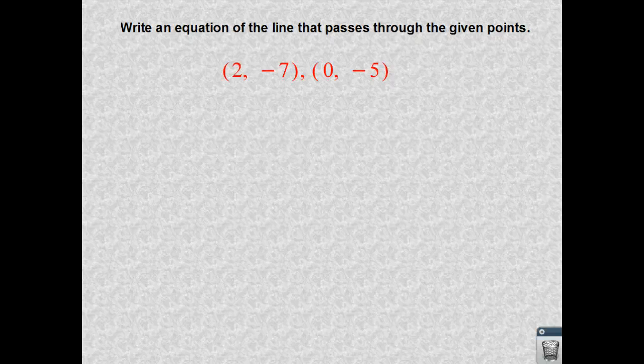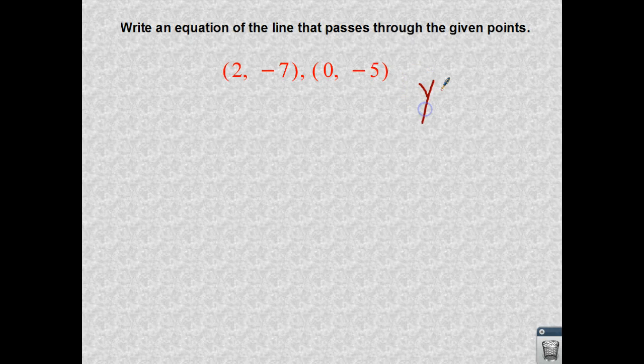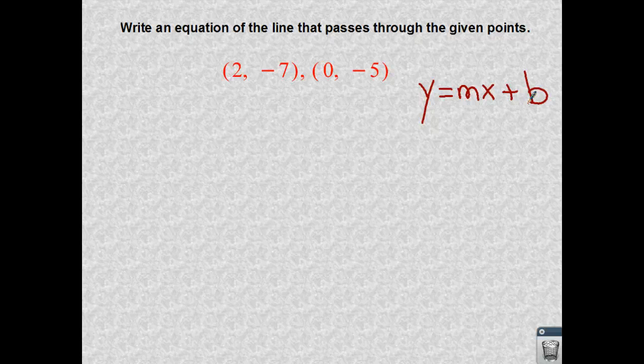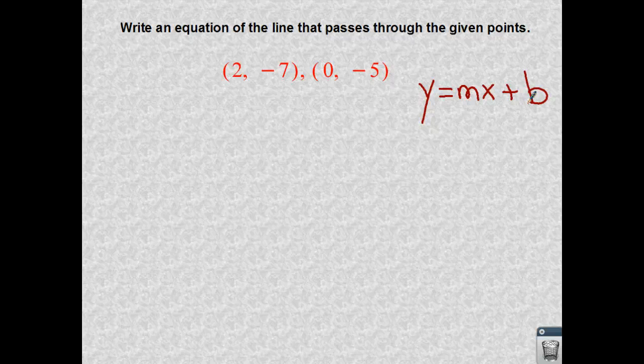All right. The next one says write an equation of the line that passes through the given points. And right now, as you know, we've been working with slope-intercept form. So the two things I need are, you guessed it, the slope and the y-intercept. Are there any items, any ordered pairs up here that help you right away get you a portion of your form? Does anything jump out at you?